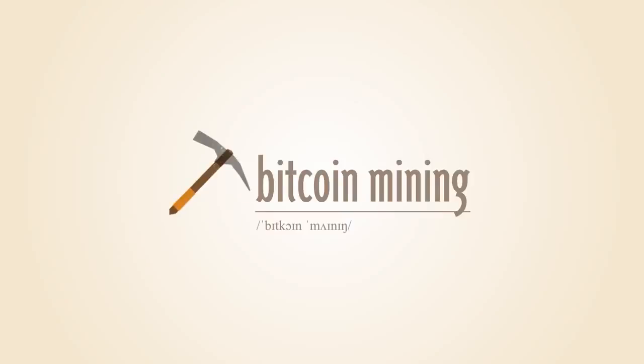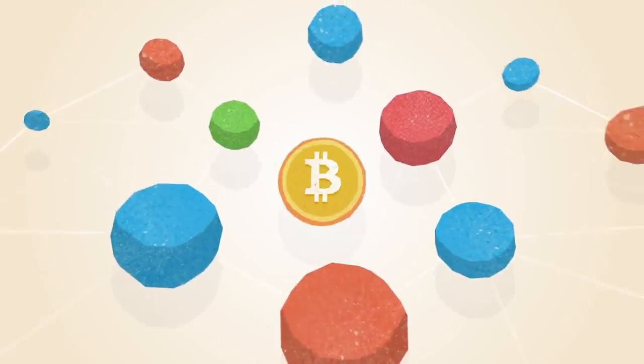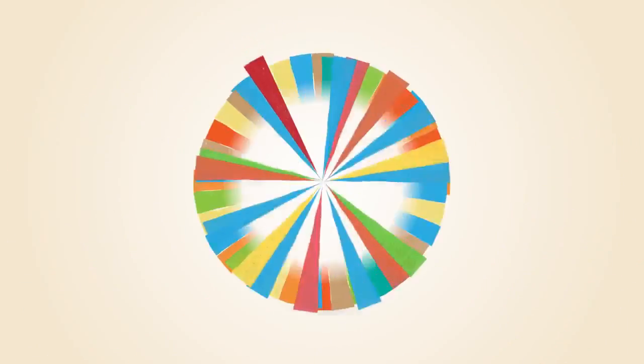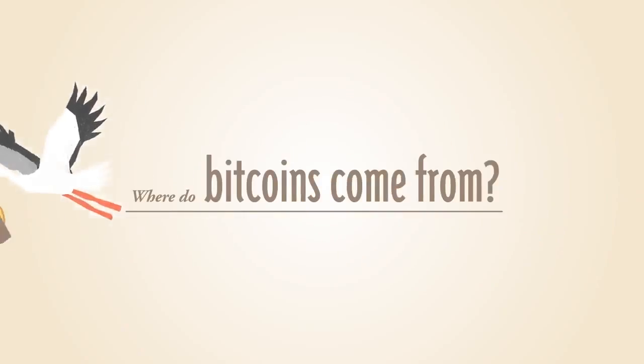What is Bitcoin mining? Bitcoin operates as a peer-to-peer network. This means that everyone who uses Bitcoin is a tiny fraction of the bank of Bitcoin. But where do Bitcoins come from?